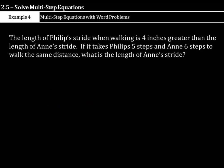Now, let's look at solving a multi-step equation with the word problem. The length of Philip's stride when walking is 4 inches greater than the length of Anne's stride. If it takes Philip 5 steps and Anne 6 steps to walk the same distance, what is the length of Anne's stride? Let's set up variables for each person here. Let's call Philip P. Well, Philip's is Anne's stride plus 4 inches. Well, then Anne's stride is just Anne.